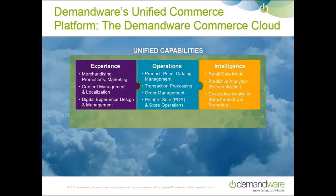You can see some of the most important capabilities listed here, broken into three categories: experience, operations, and intelligence. In the experience category, the platform includes merchandising, promotions management, marketing capabilities, content management, and the ability to design and manage digital experiences. In the operations category are product, price, and catalog management, transaction processing, order management, and full point-of-sale and store operations management capabilities. Finally, in the intelligence category, the platform has a built-in retail data model, predictive analytics which powers intelligent personalization, and descriptive analytics that powers benchmarking and reporting.